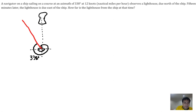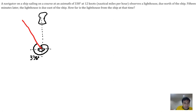So basically, the ship is traveling in this direction at 338 degrees. Now, 15 minutes later, the lighthouse is already due east of the ship — so the ship has moved here and the lighthouse is due east.